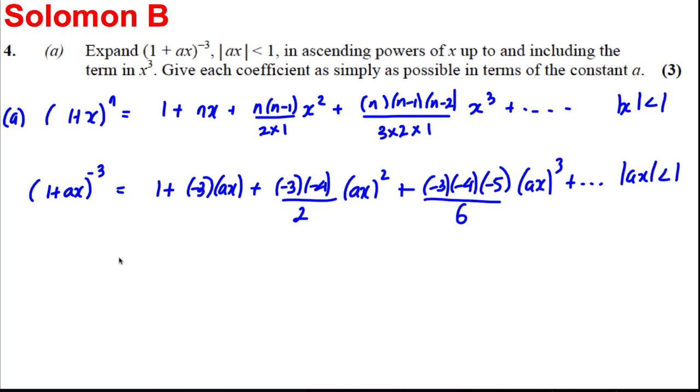Let's tidy this up a little bit. This is 1 subtract 3AX. Here we're going to have 12 over 2 which is 6, so we're gonna have 6A squared X squared, so plus 6A squared X squared. Here we're going to have negative 3 times negative 4 times negative 5 divided by 6, so we're going to have subtract 10A cubed X cubed as follows, plus dot dot dot for the modulus of AX less than 1. So we have simplified the coefficients in terms of A and this is what we have: 1 plus AX to the power of negative 3 is equal to the following.